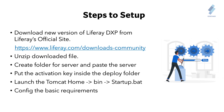First we will download the latest version of Liferay DXP from the Liferay official site. After that, we will create a folder for the server and unzip the Liferay server into that folder. Next, put the activation key inside the deploy folder. Then go to the Liferay Tomcat server, navigate to home, go to the bin folder, and click the startup.bat file.